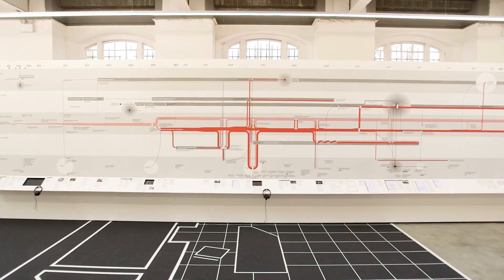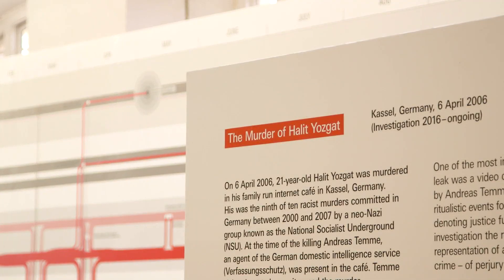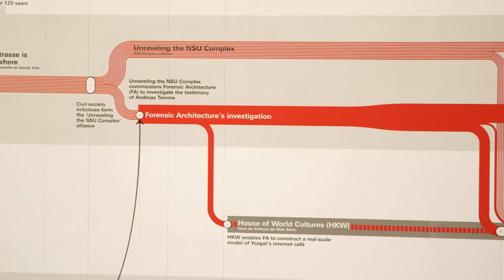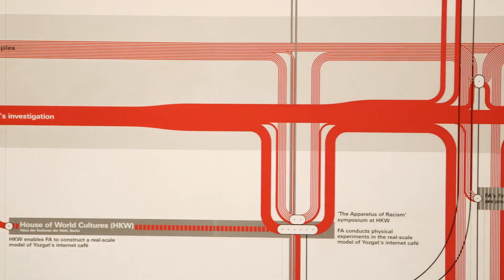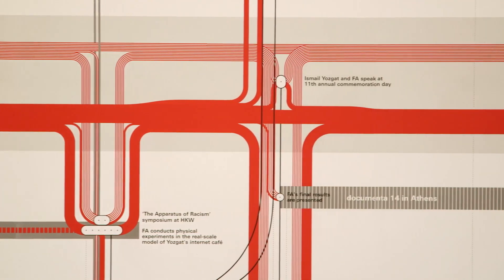There's another example in this exhibition where a member of German intelligence was present when a young man was murdered by neo-Nazi groups. In the first decade of the 21st century, a group of neo-Nazis called the NSU — the National Socialist Underground — were killing migrants across Germany. It took the German state about ten years to realize those killings were neo-Nazi killings. The state claimed this was what they called Turkish-on-Turkish violence, or in a very derogatory sense, the 'döner killings.' Only when the neo-Nazi cell was broken did the German public and police realize the truth.